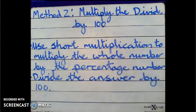Method 2: multiply, then divide by 100. Use short multiplication to multiply the whole number by the percentage number. Then divide your answer by 100.